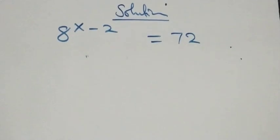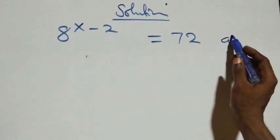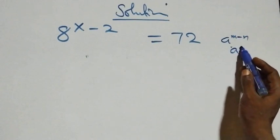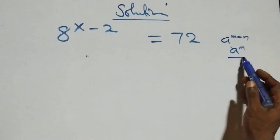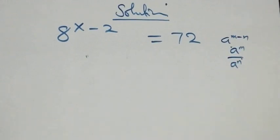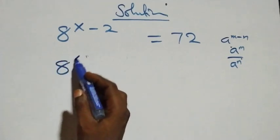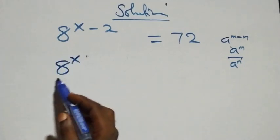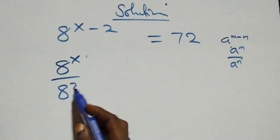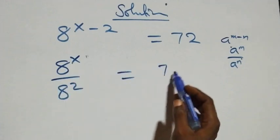This follows from the rule that a raised to power m minus n is the same as a raised to power m over a raised to power n. So this becomes 8 raised to power x over 8 squared equals 72.